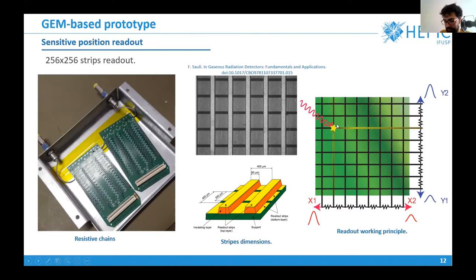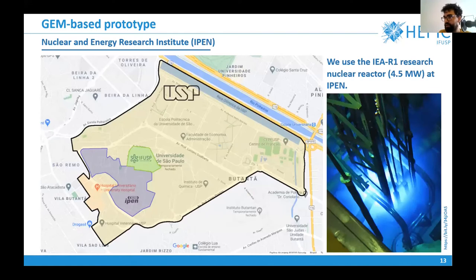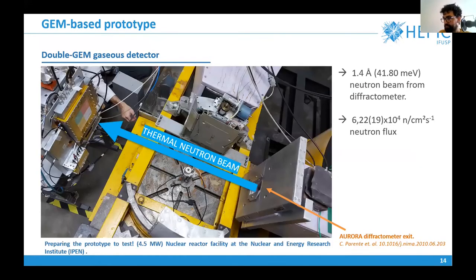We tested our detector at the IEA R1 research reactor. We have this thermal neutron beam which is produced by a monochromator, the same beam used in the Aurora diffractometer. It was calibrated so it has 41.8 milli-electron volts of energy and this flux here, 6 times 10 to the power of 4 neutrons per centimeter square per second.